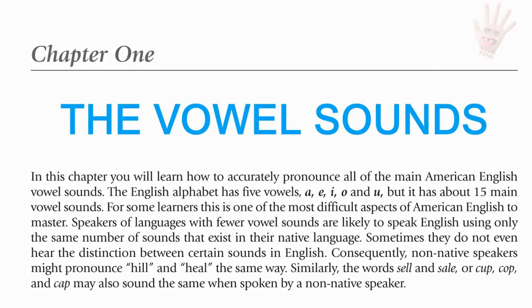Chapter 1: The Vowel Sounds. The English alphabet has five vowels — A, E, I, O, and U — but it has about 15 main vowel sounds. For some learners, this is one of the most difficult aspects of American English to master. Speakers of languages which have fewer vowel sounds are likely to speak English using only the same number of sounds that exist in their native language. Sometimes they do not even hear the distinction between certain sounds in English.